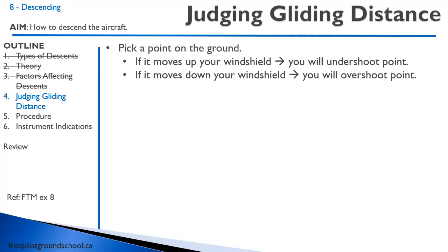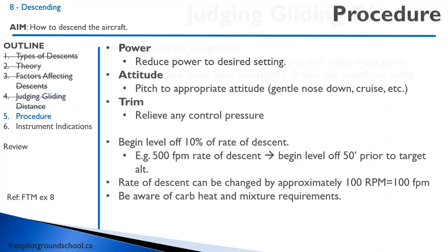You'll adjust power accordingly, and how much to adjust is something you'll learn during your flying lessons. Similar to climbing, we have a descent procedure, but it's somewhat reversed: power, attitude, trim. First, reduce the power to the desired setting. Then allow the attitude to move to the appropriate nose-down attitude, or return to cruise attitude when leveling off. Finally, trim the aircraft to relieve control pressure. The rule of thumb for beginning your level-off is 10% of the rate of descent — so if descending at 500 feet per minute, begin leveling off 50 feet prior to target altitude.